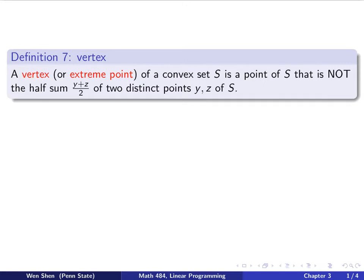Here is the definition. A vertex — also called, more generally, an extreme point — of a convex set S is a point of S such that this point is not the half sum (y plus z) over 2 of two distinct points y and z of S. In other words, if you can find two distinct points y and z, both in S, and the midpoint between them — the half sum — is your point, then that cannot be a vertex.